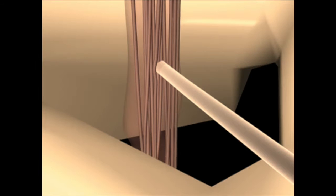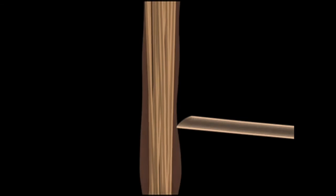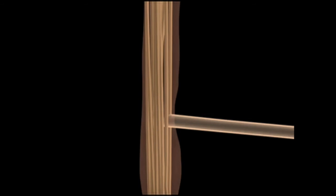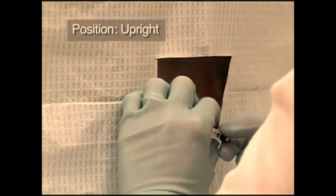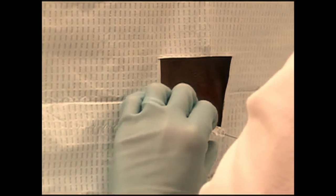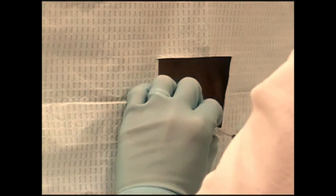As the needle passes through the ligamentum flavum, you may feel a popping sensation. Once you have reached this point, the needle should be advanced in 2 mm increments and the stylet withdrawn after each increment to check for CSF flow.